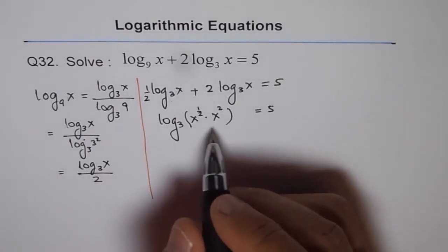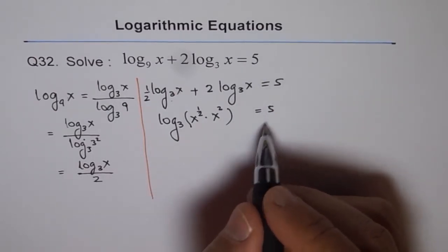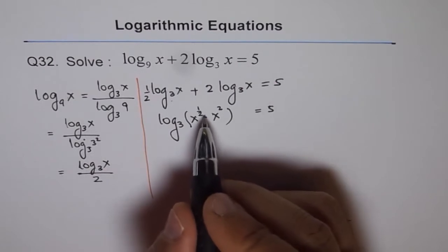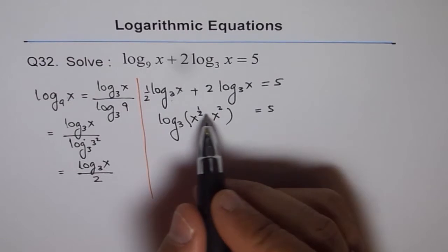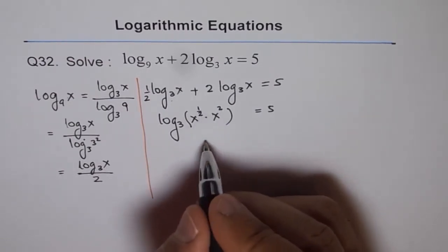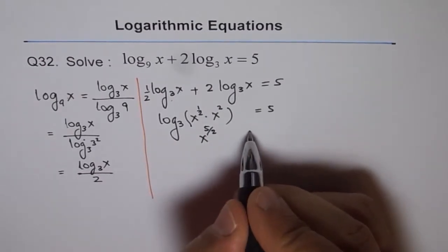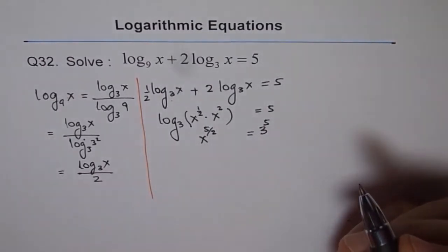From here, we can say 3 to the power of 5 equals x to the power of... we'll add these two powers, which is one-half plus 2, giving us 5 over 2. So x to the power of 5 over 2 equals 3 to the power of 5.